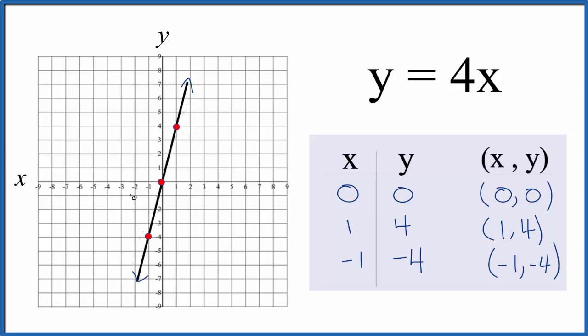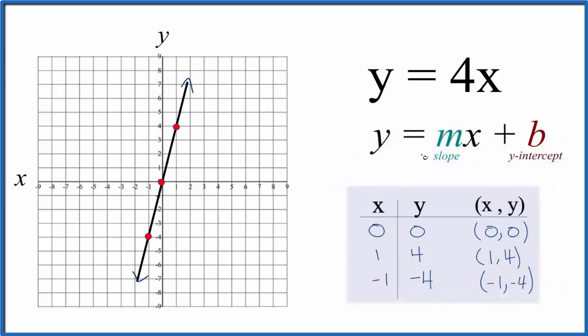Let's use the slope-intercept formula now to check our work. So we have y equals mx plus b. There's our m, that's four, but we don't have a b so we can just assume b is zero, that doesn't change the equation.